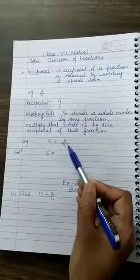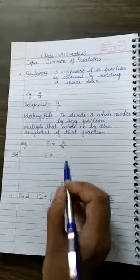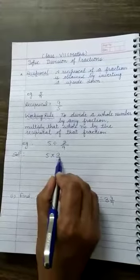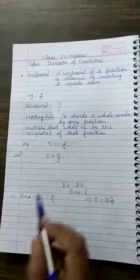What is the reciprocal of 2 by 9? It will be 9 by 2. Now, just solve it.